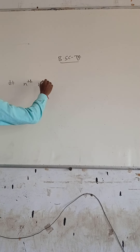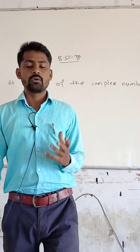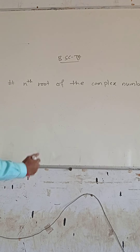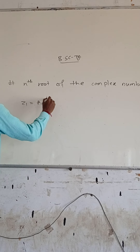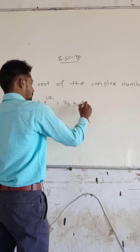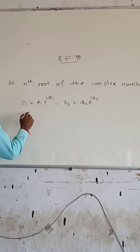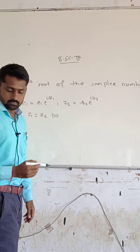Now I am going to discuss the equality of two complex numbers when they are represented in exponential form. So if Z1 is equal to R1 e raised to i theta 1, and Z2 is equal to R2 e raised to i theta 2, then these two complex numbers are equal — Z1 is equal to Z2 — if and only if R1 is equal to R2 and theta 1 is equal to theta 2 plus 2k pi.